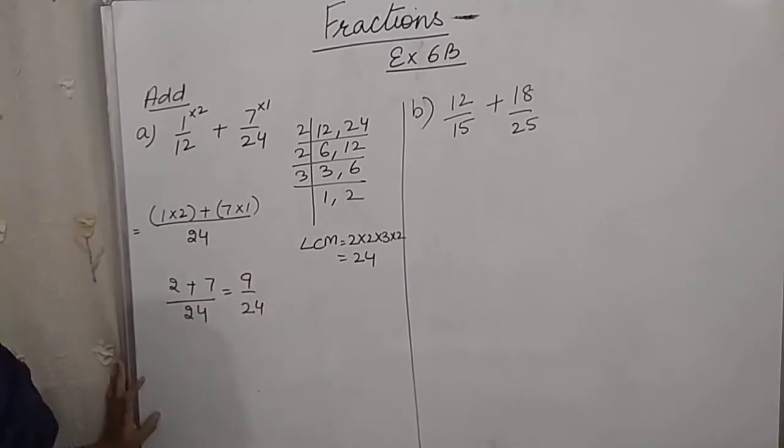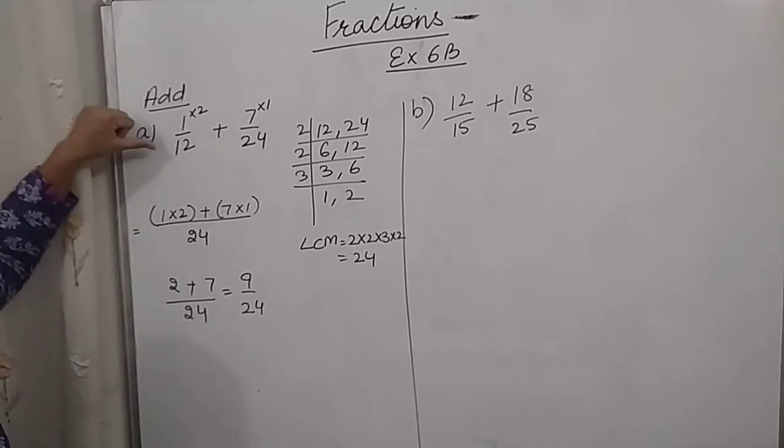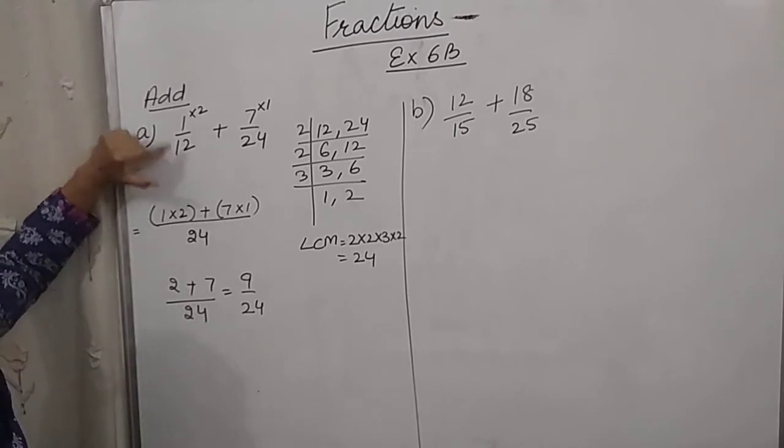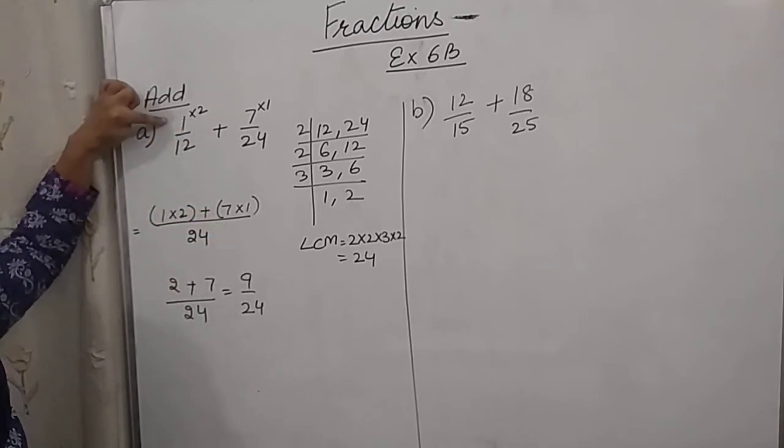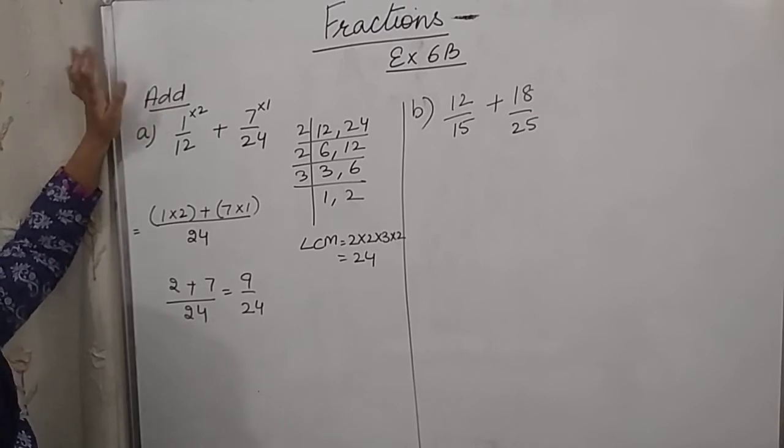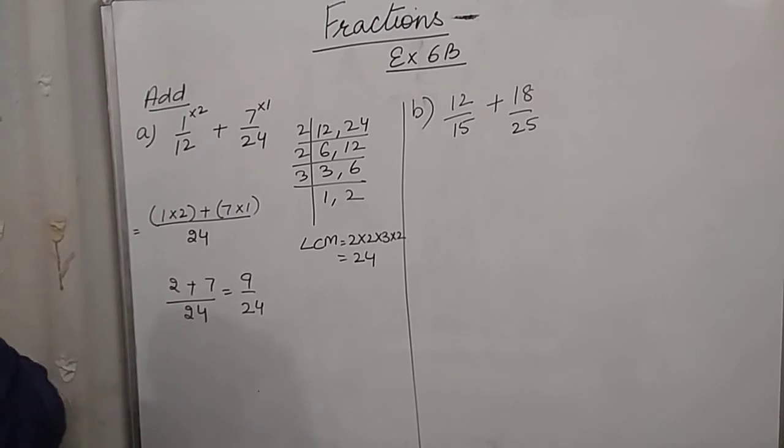Now what are we doing here? We found which number should be multiplied by the denominator to get the LCM. So we are multiplying the same number with the numerator. Because we cannot multiply any number with the denominator leaving the numerator. We have to multiply the same number with the numerator as well. So our answer is 9 by 24.